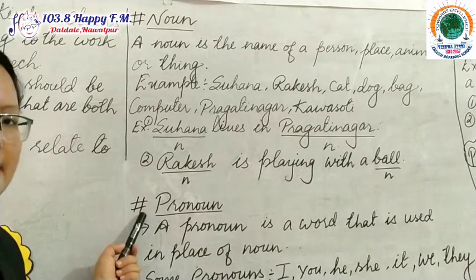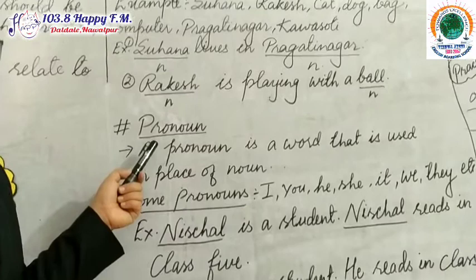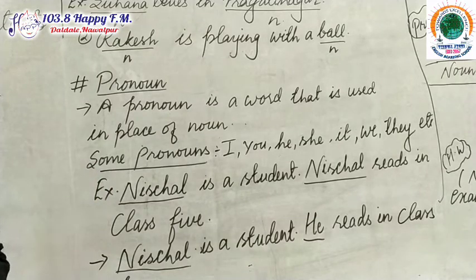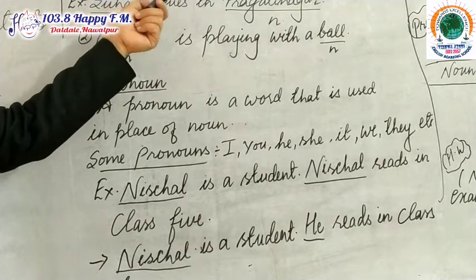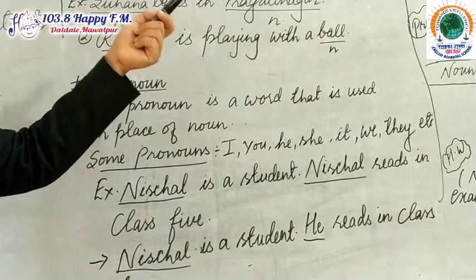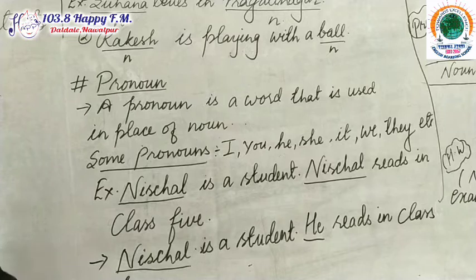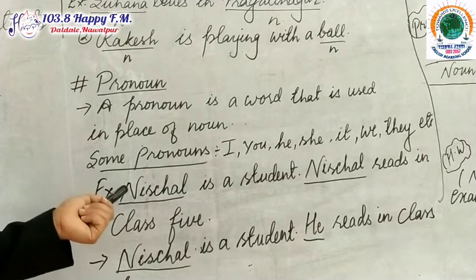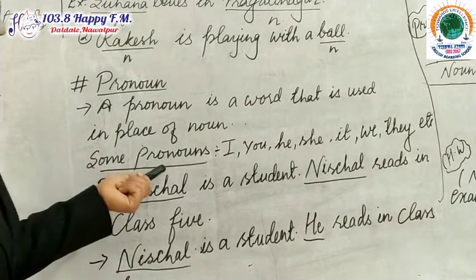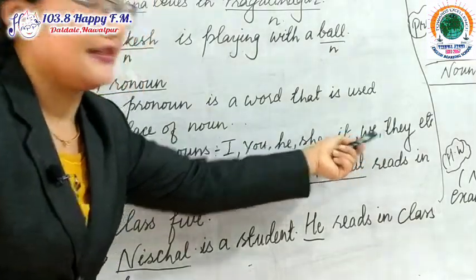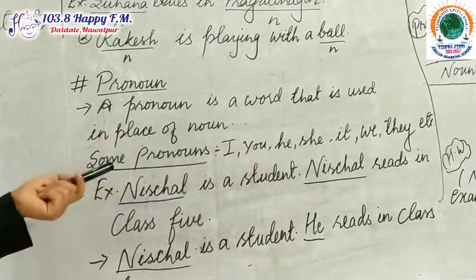Now let's go to another part of speech — pronoun. A pronoun is a word that is used in place of a noun. We have already read about noun: Suhana, Rakesh, cat, dog — names of a person, place, animal, or thing. In the place of a noun, we can put a pronoun. We can replace a noun with a pronoun. Some pronouns are: I, you, he, she, it, we, they, etc. These are pronouns, and there are other pronouns as well.